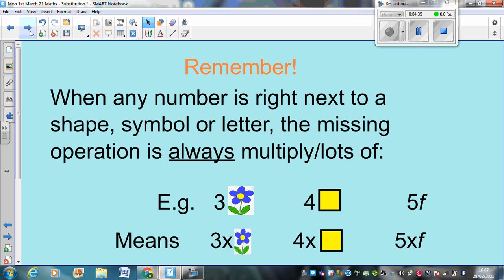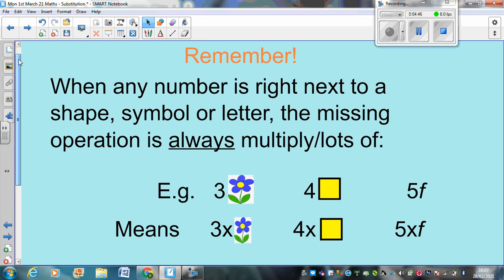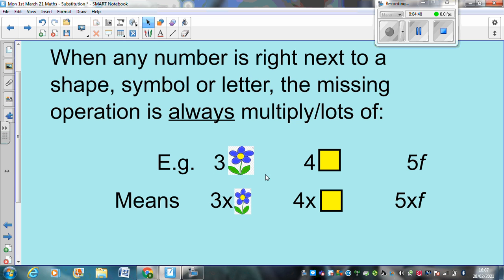So, remember, when any number is right next to a shape or a symbol or a letter, the missing operation is always multiply. It's always lots of. For example, three flowers, three squares, five F. Just means three lots of flowers, three lots of squares, three lots of F. Or three times flowers, three times box, three times F.